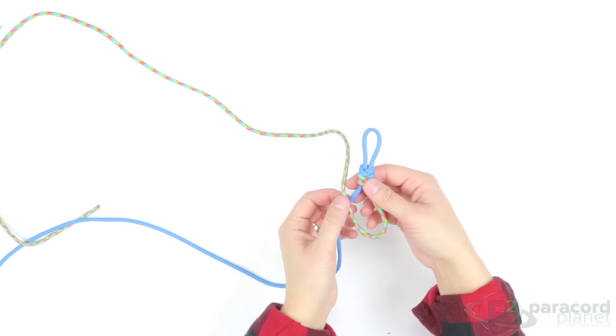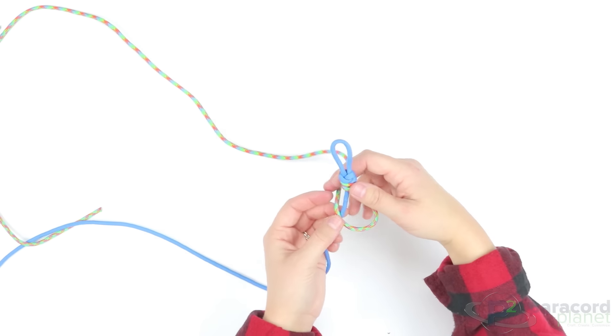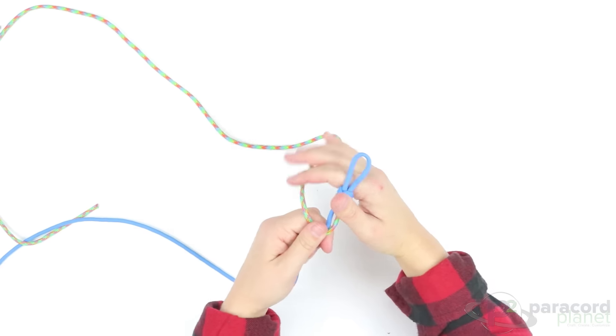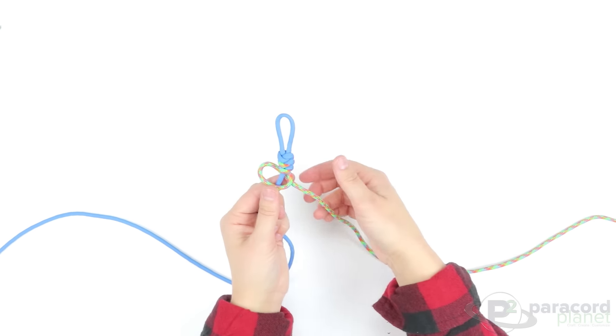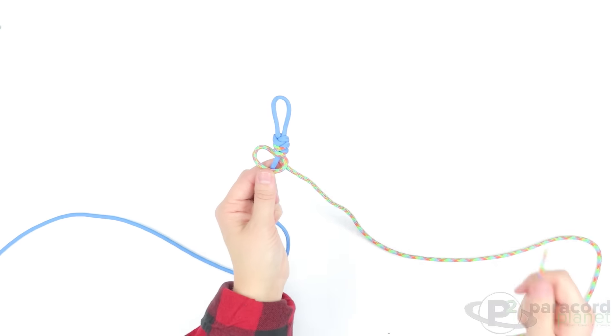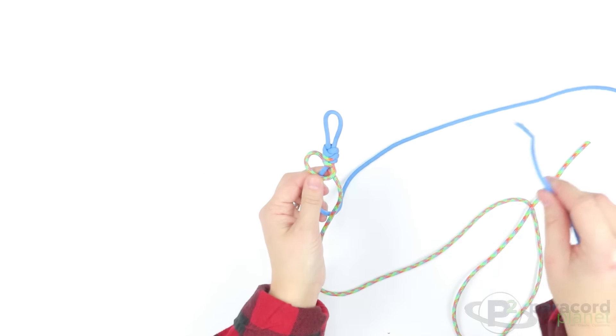So make a backwards four. Just for quickness sake, make a quick backwards four. Flip it over, so now the loop is on the left. Take your cord on the left and go down through the loop.